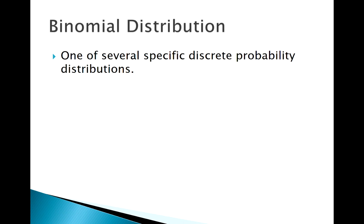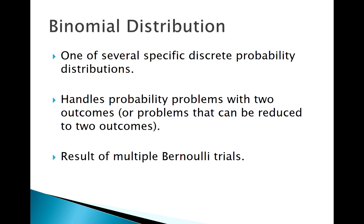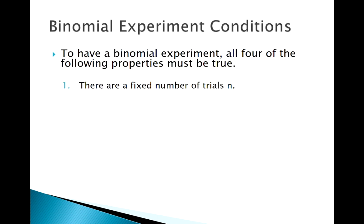So how about the binomial specifically? It handles cases where there are only two potential outcomes — special situations called Bernoulli trials. A Bernoulli trial is a situation with two specific outcomes. In order to apply the binomial distribution, first we need a fixed number of Bernoulli trials — the problem should tell us we're repeating this process n times.